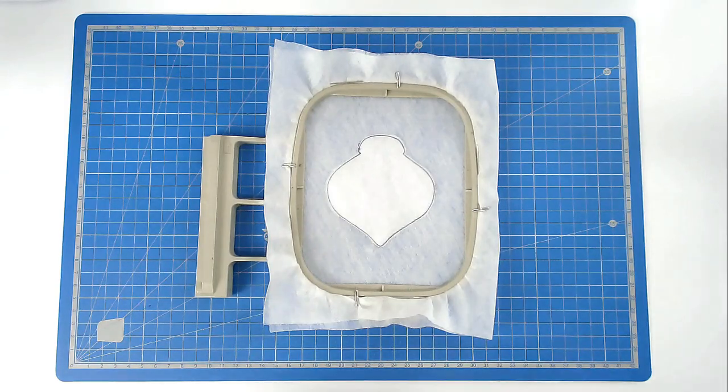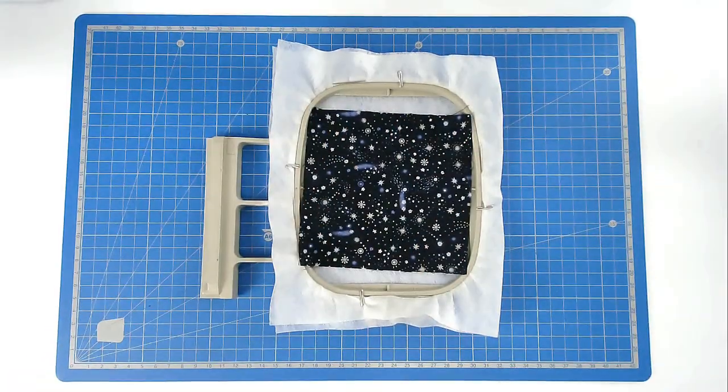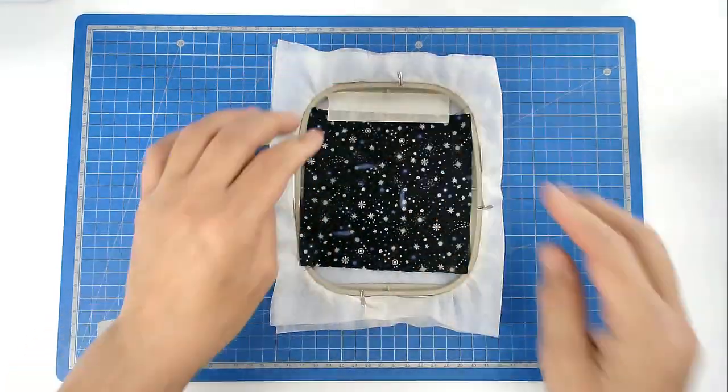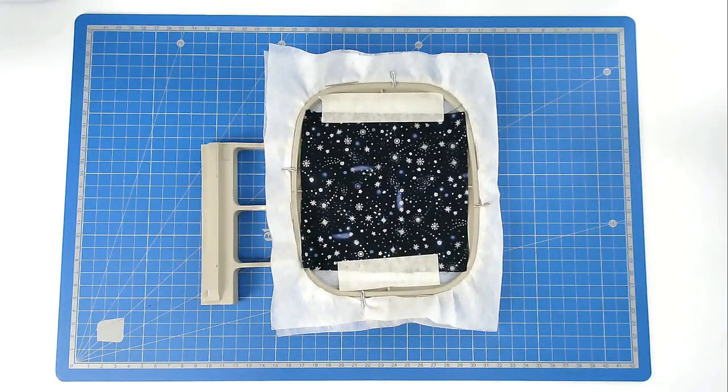Place your front fabric over the outline and tape it in place. You're now going to stitch round number three and that's going to secure your fabric to the hoop.